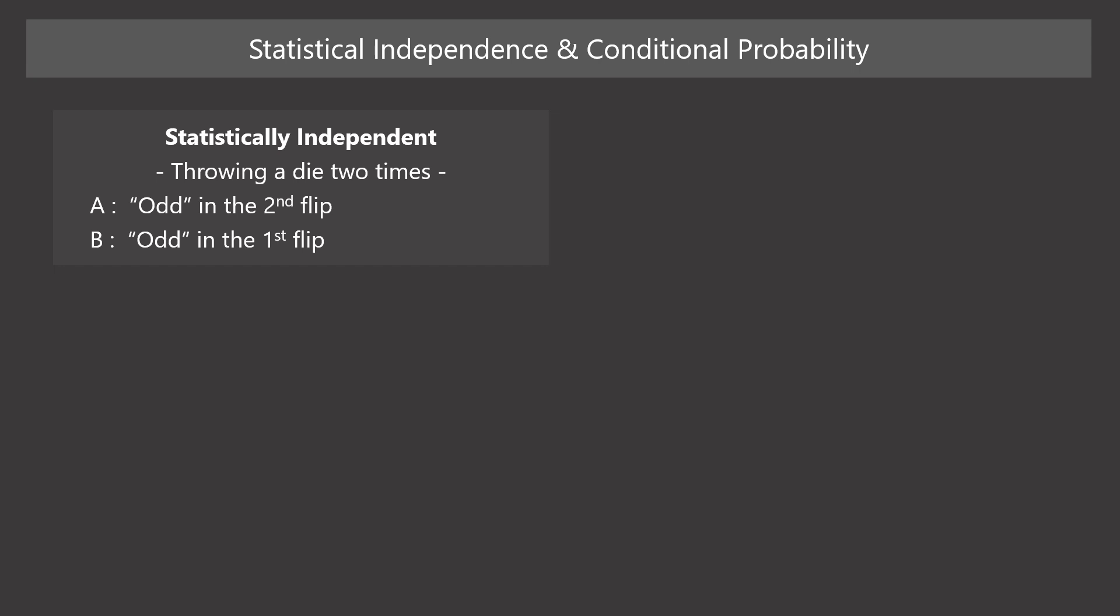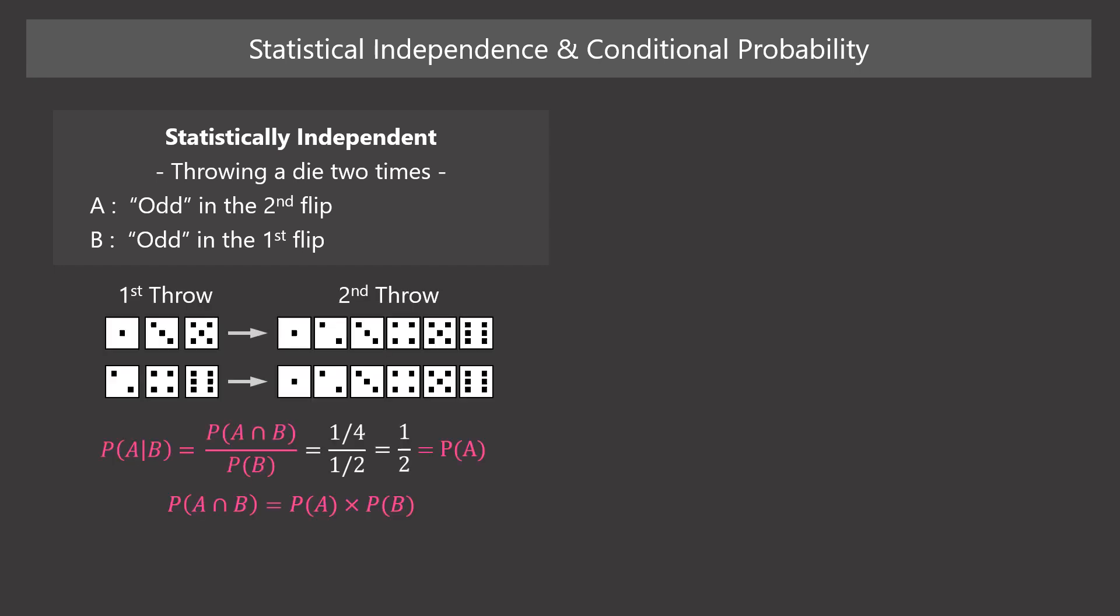That is, we want to compute the probability of getting an odd number in the second throw on the condition that we get an odd number in the first throw. By applying the formula of conditional probability, we can get the answer. It is one half, the same as the probability of event A.